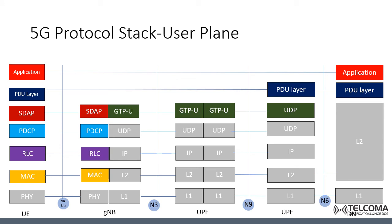The third layer is RLC, the Radio Link Control layer. The main functions and services of the RLC sublayer depend on the transmission mode and include mainly the transfer of upper layer PDUs, sequence numbering independent of the one used in PDCP, error correction, segmentation and resegmentation, and RLC reestablishment.